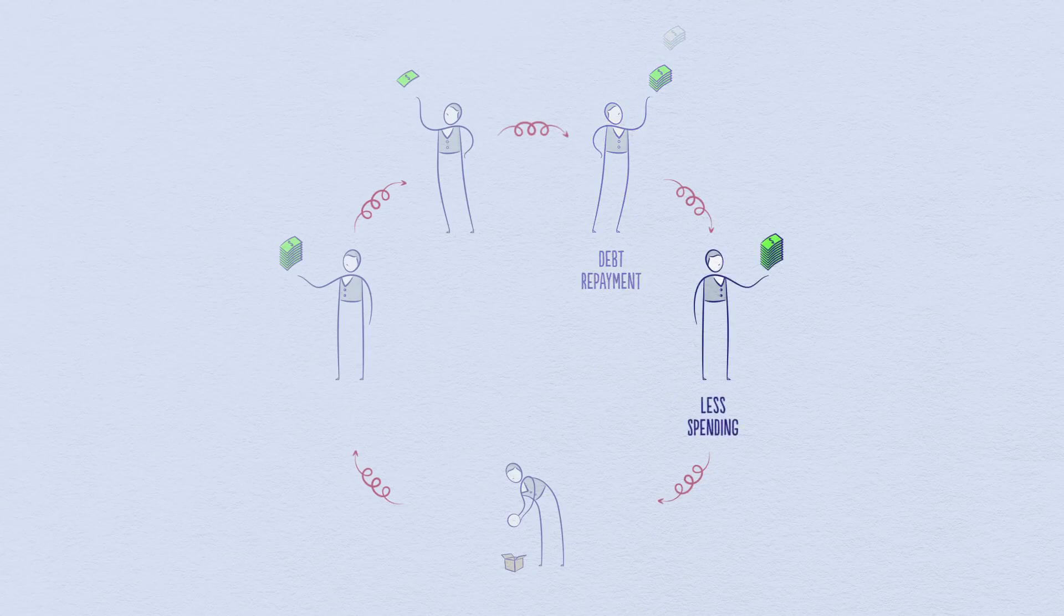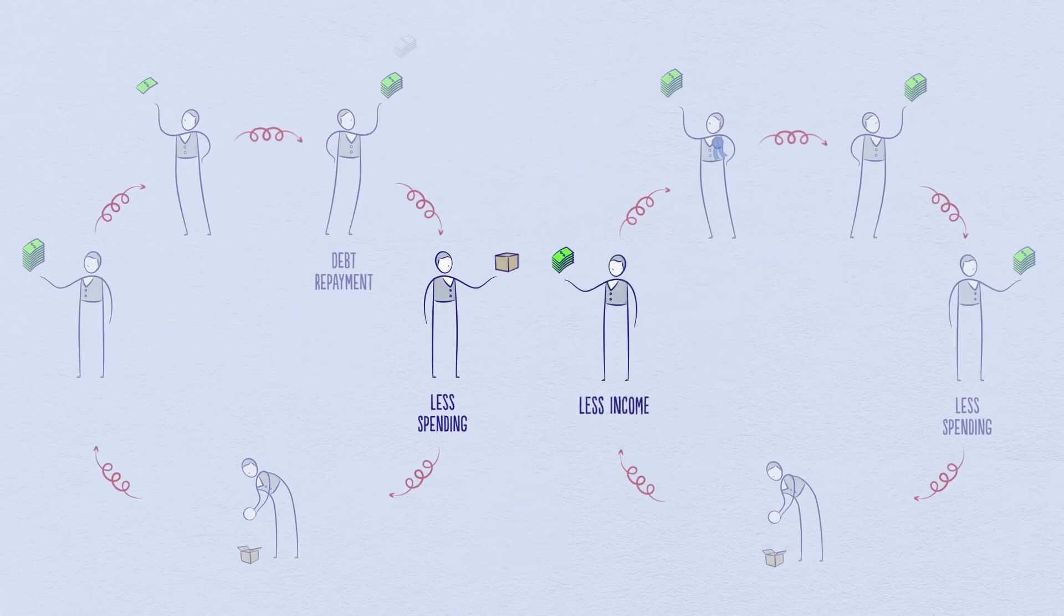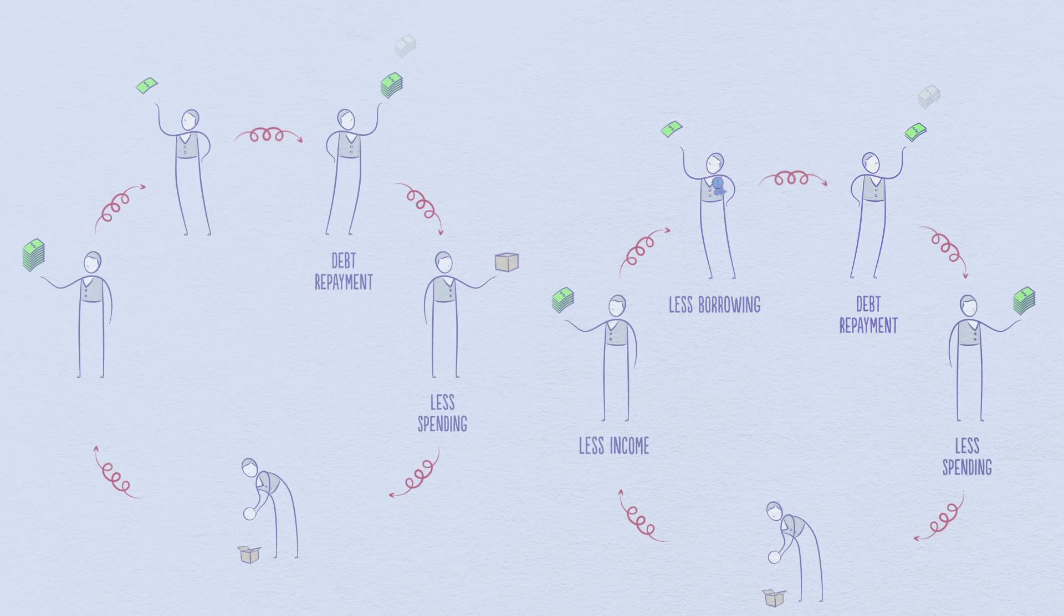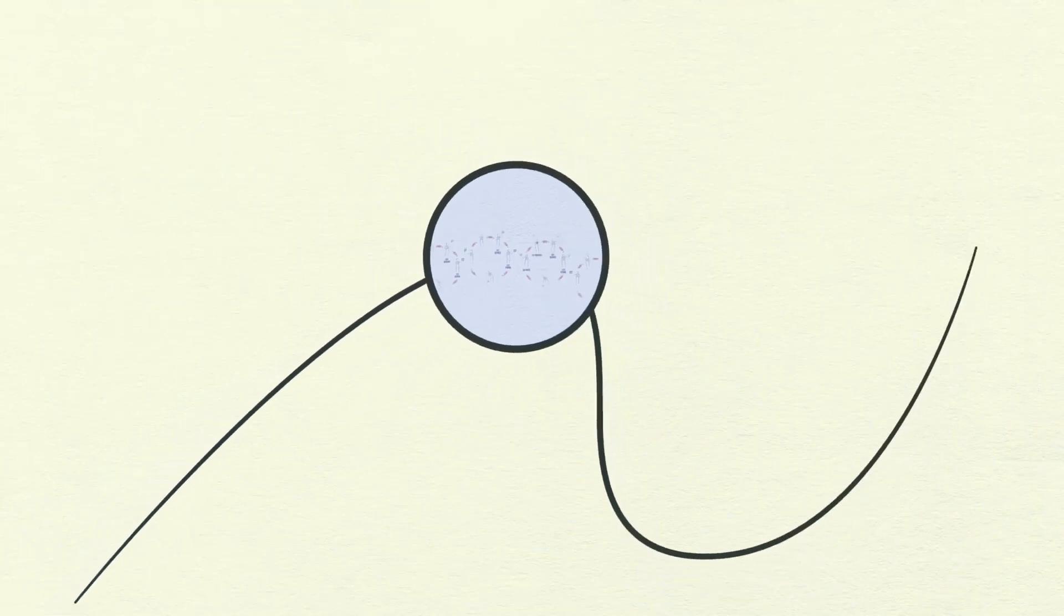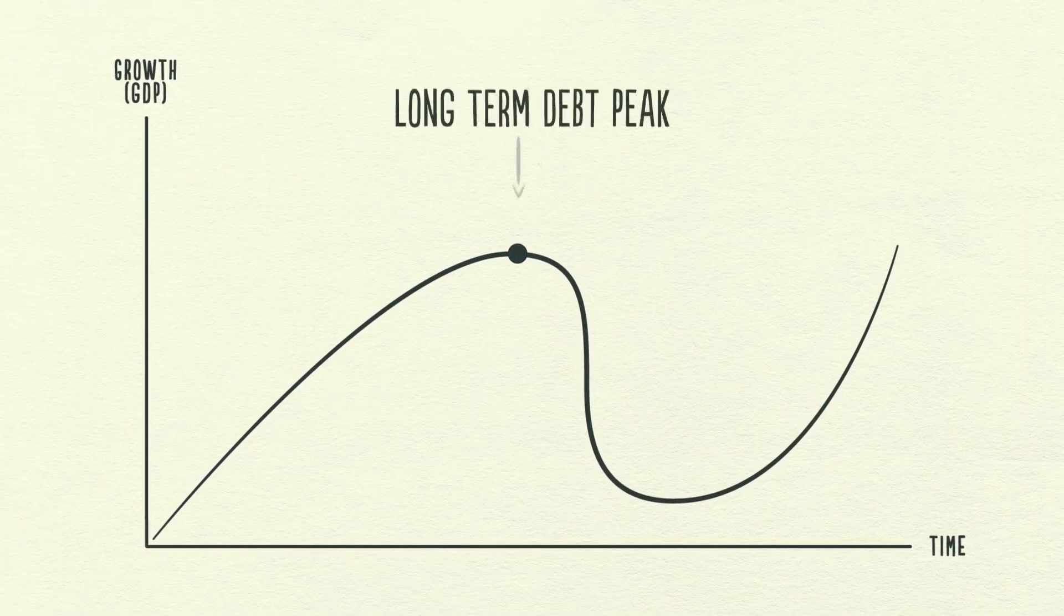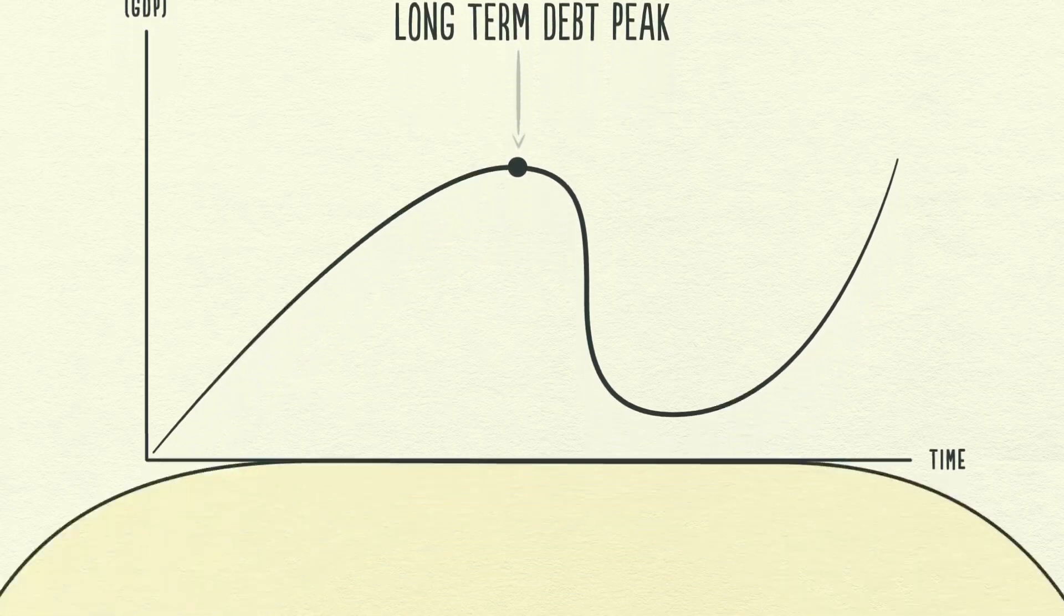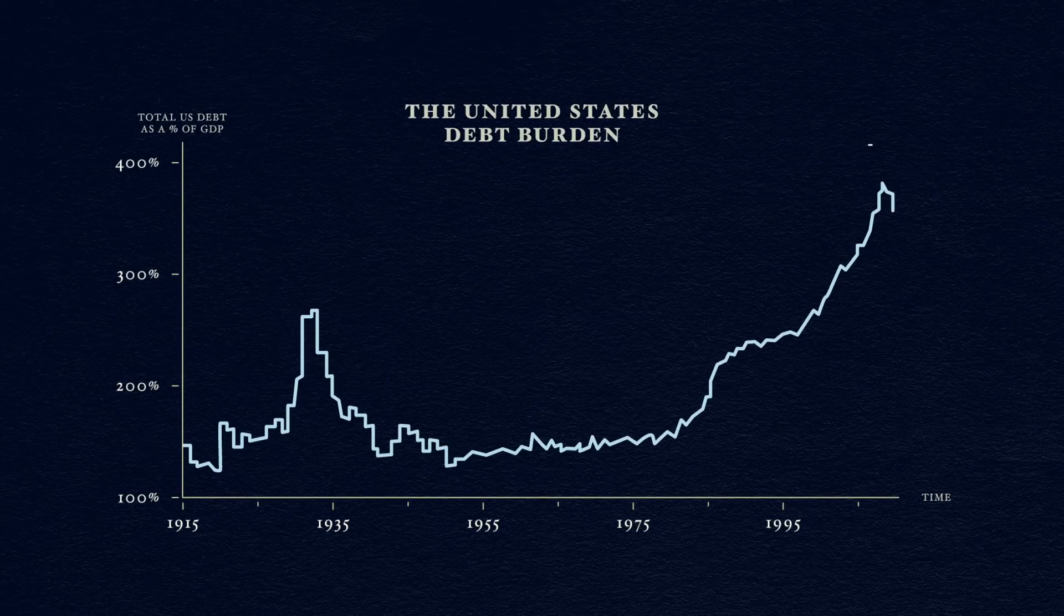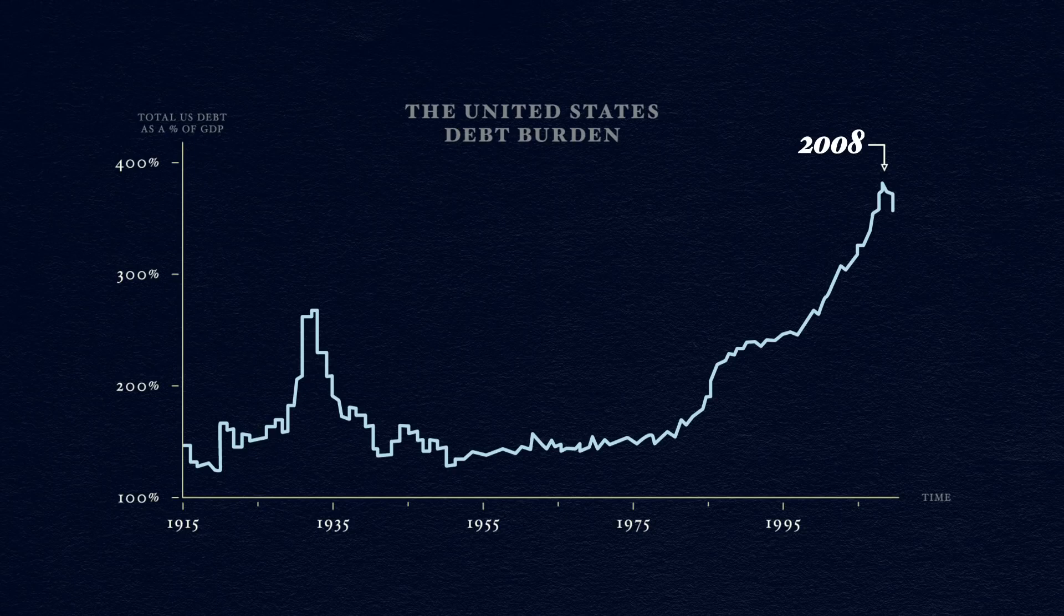And since one person's spending is another person's income, incomes begin to go down, which makes people less creditworthy, causing borrowing to go down. Debt repayments continue to rise, which makes spending drop even further, and the cycle reverses itself. This is the long-term debt peak. Debt burdens have simply become too big. For the United States, Europe, and much of the rest of the world, this happened in 2008. It happened for the same reason it happened in Japan in 1989 and in the United States back in 1929.